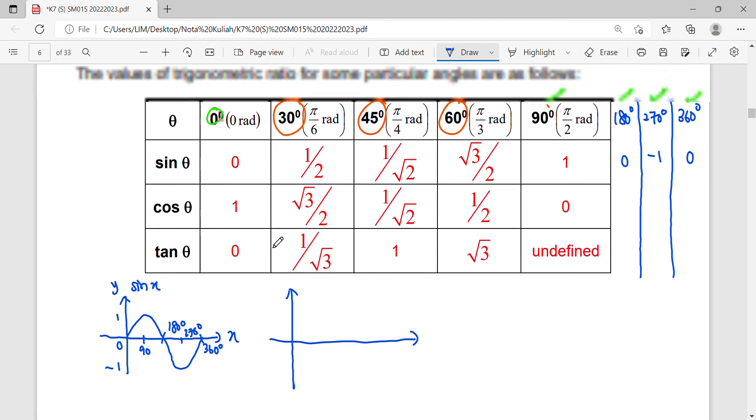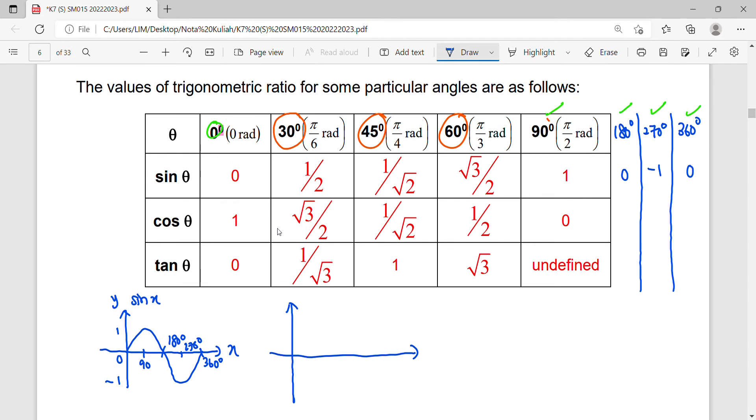For cosine, the graph starts with one, then goes down to negative one, then up to one. This is one period. So that means zero is at 90 degrees and 270. From here you can see cosine starts with angle zero at value one, goes to 90 degrees at value zero.